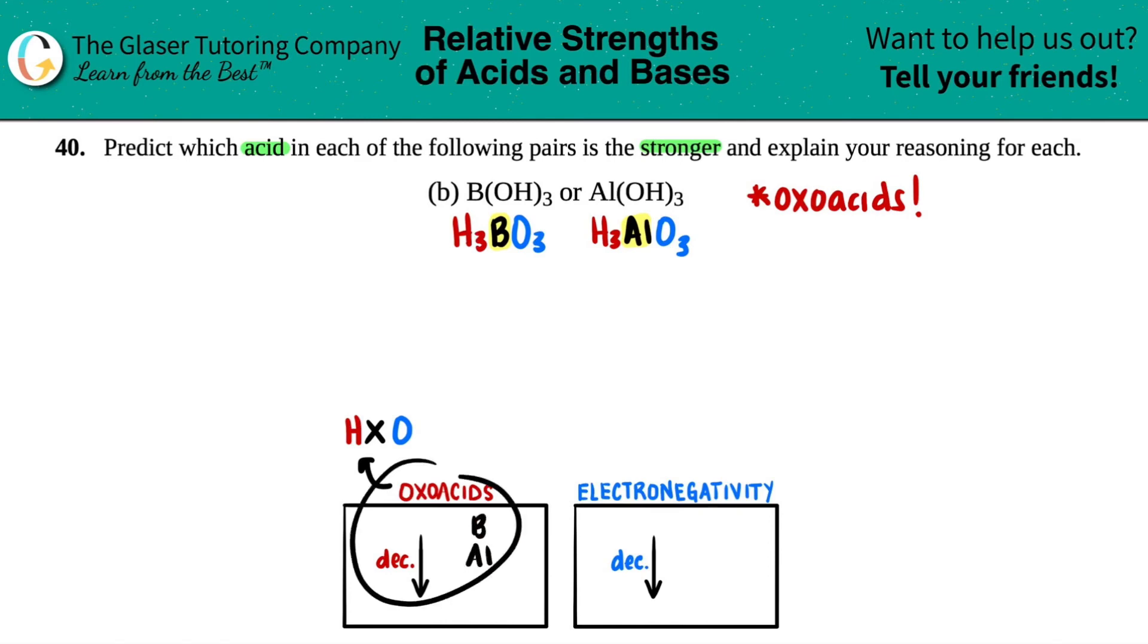The rule of thumb with oxoacids is as you go down a group, your acidity will decrease. So if you're going down, aluminum is less of an acid than boron.